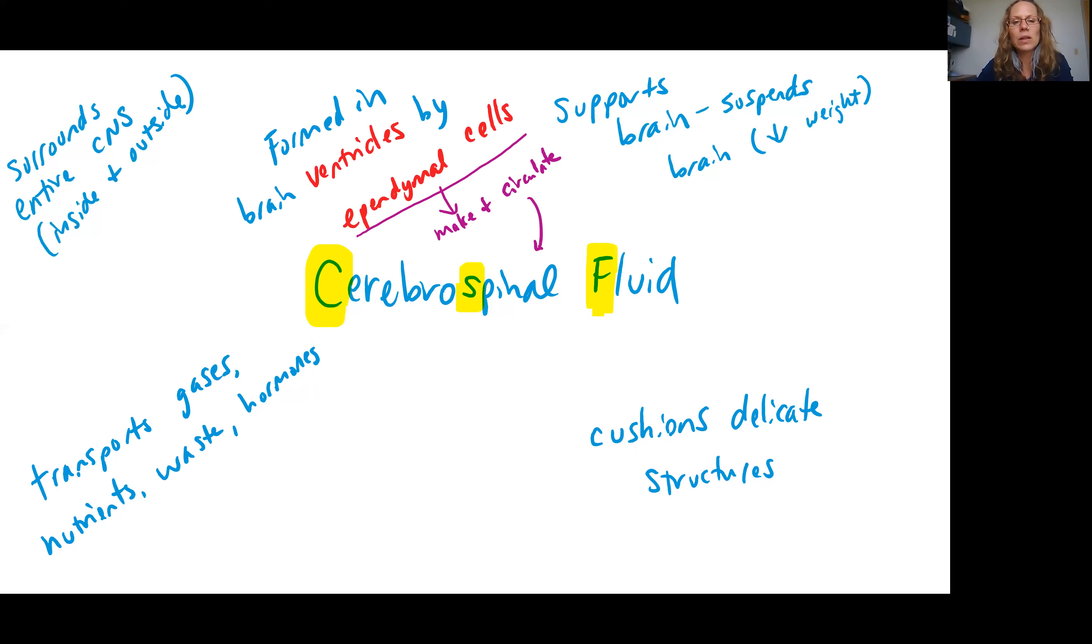Your cerebrospinal fluid is formed in what are called your brain ventricles. These are structures you should be labeling as part of your lab work. You have a group of cells in the ventricles called ependymal cells. These are one of our types of neuroglia cells that is important in making and circulating the cerebrospinal fluid.